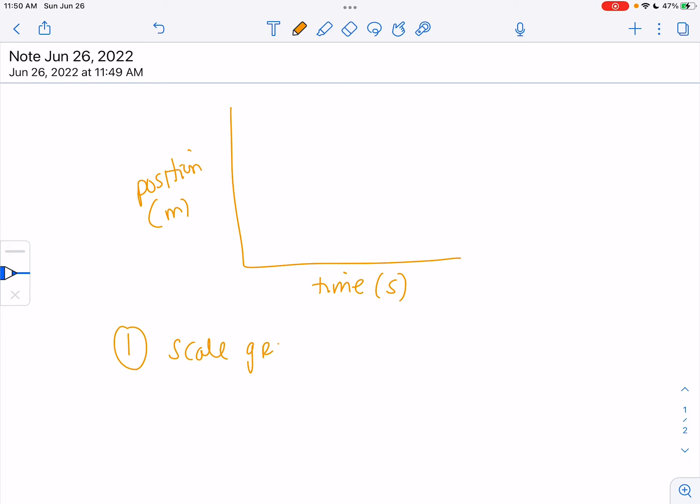You need to scale the graph and use at least half of the grid that's provided. So make sure that you actually mark in, you know, like whatever these are, you know, 2, 4, 6, 8, 10, 1, 2, whatever. So make sure you mark in the numbers, use at least half the grid.